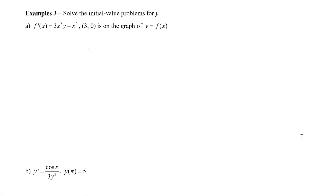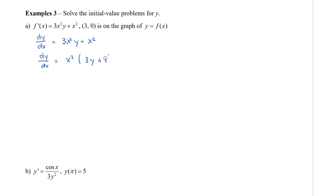The first one is to solve the initial value problem for y, where the point (3, 0) is on the graph of y equals f of x — that's our initial value. First, we change f prime to dy/dx. We need to separate this, and we can do so by factoring out x squared. So dy/dx equals x squared times (3y plus 1). Now I can separate this by dividing 3y plus 1 to the left side.